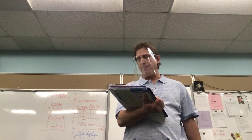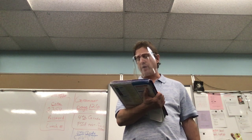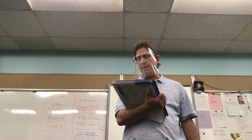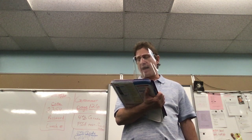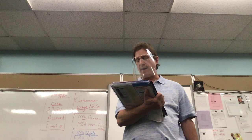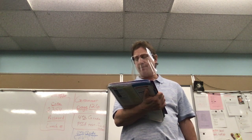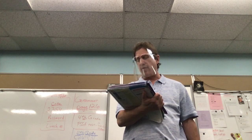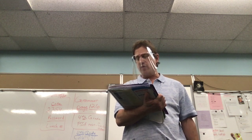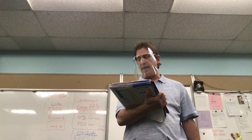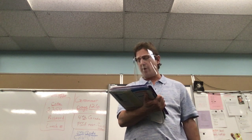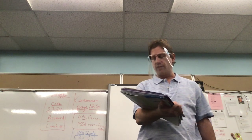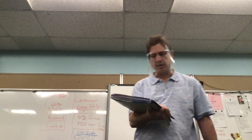In addition to weathered rock, soil also contains humus, air, and water. Humus is the decayed remains of plants and animals. The kinds of materials in soils and their amounts vary from place to place. Different kinds of soil contain different amounts of weathered rock, minerals, humus, air, and water. Sandy desert soil can only hold a small amount of water, while soil that contains a lot of clay can hold a lot of water.